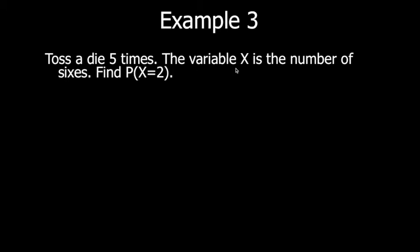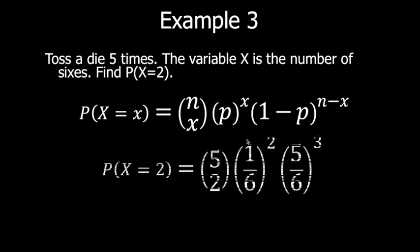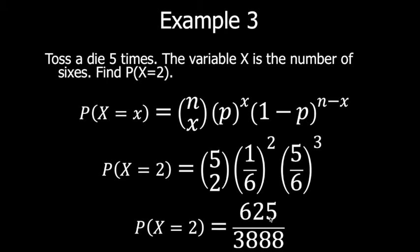Example three: Toss a die five times. The variable x is the number of sixes. Find P(X=2) — the probability of getting exactly two sixes in five tosses. Using the formula: n = 5, x = 2, p = 1/6, and (1−p) = 5/6. So P(X=2) = C(5,2) × (1/6)² × (5/6)³. Note that 2 + 3 = 5, which checks out. The answer is 625/3888.